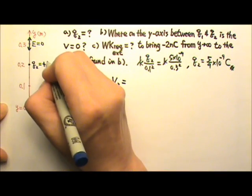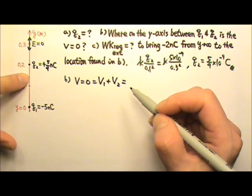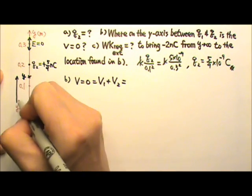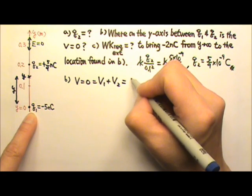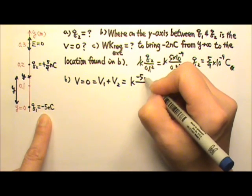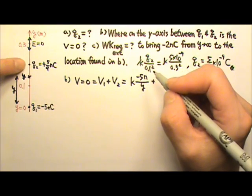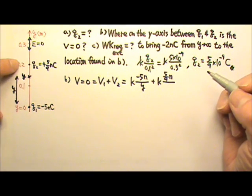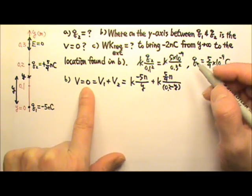Q2 is positive 5 ninths nanocoulombs. The location where V equals zero must be closer to the weaker charge. Let's say it's at location y, so the distance to the origin is y. V1 is the potential produced by Q1: KQ over R, which gives K times negative 5 nano divided by y. Plus the potential from Q2: K times 5 ninths nano divided by 0.2 minus y. These two added together should give zero.